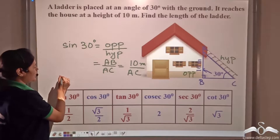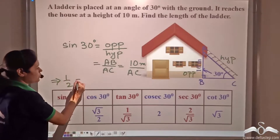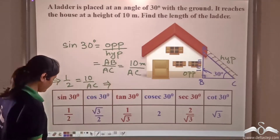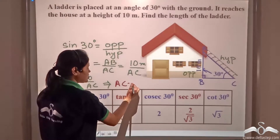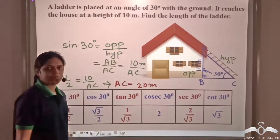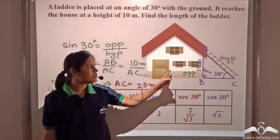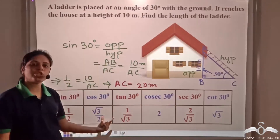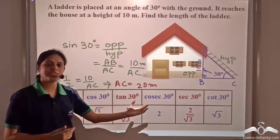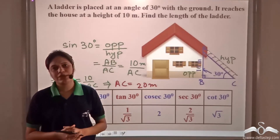Putting sin 30 = 1/2, we get 1/2 = 10/AC, which implies AC = 10 × 2 = 20 meters. So the length of the ladder is 20 meters. We can solve similar problems using these trigonometrical ratios — this shows why it is important to learn them for special angles, as they help us solve real life application-based problems.